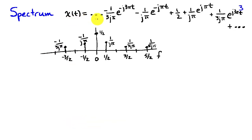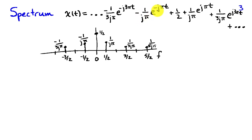Writing out some of the terms in the infinite Fourier series expansion for this square wave: x of t equals, starting with k equals minus 3, negative 1 over 3 j pi times e to the minus j 3 pi t, minus 1 over j pi times e to the minus j pi t for k equals minus 1, then one half for k equals 0, then 1 over j pi times e to the j pi t for k equals 1, and 1 over 3 j pi times e to the j 3 pi t for k equals 3.